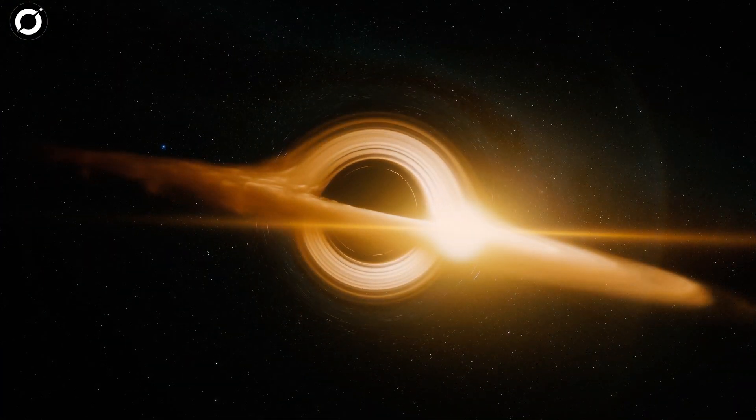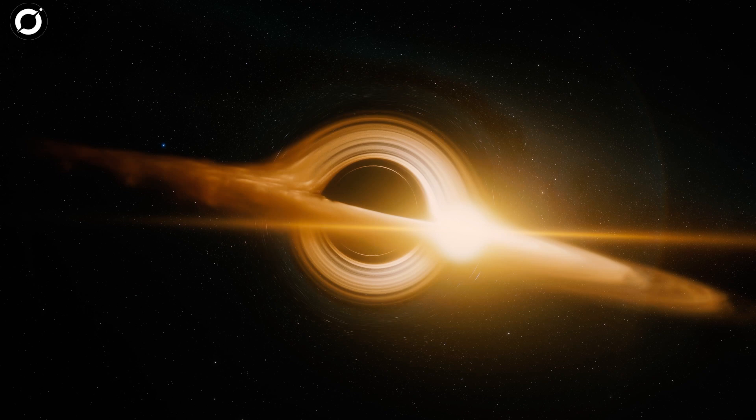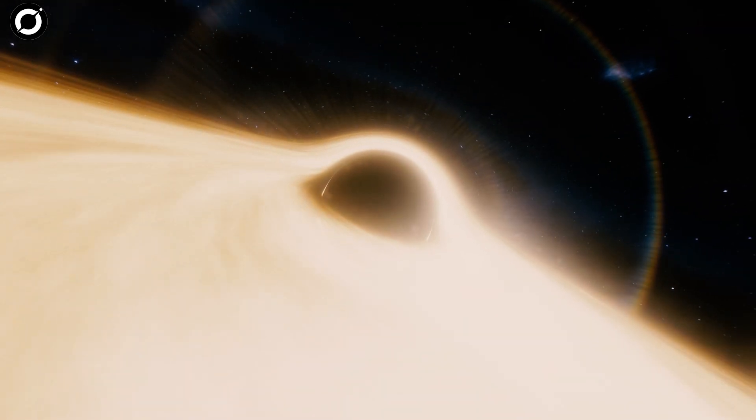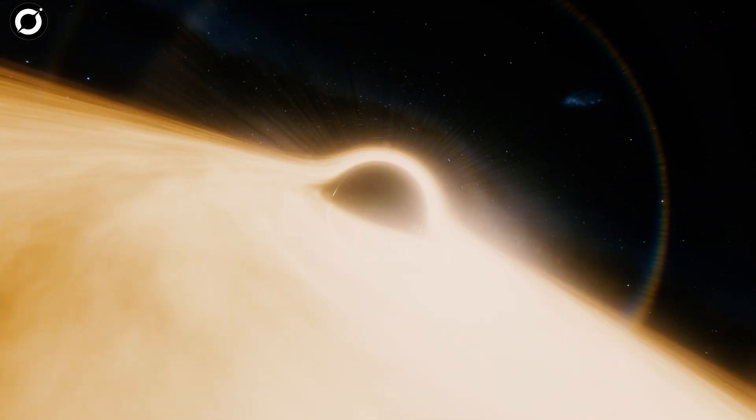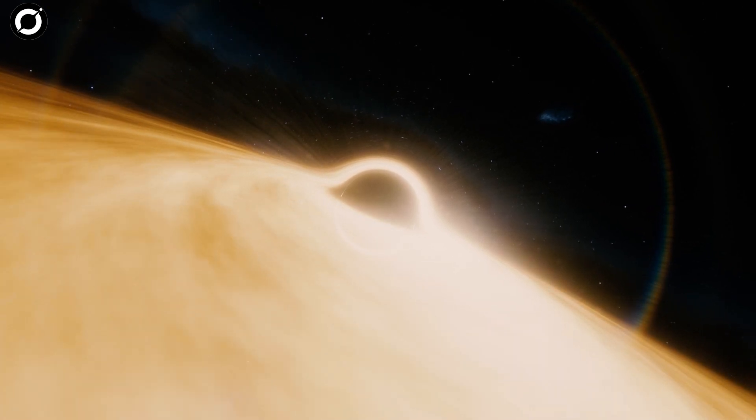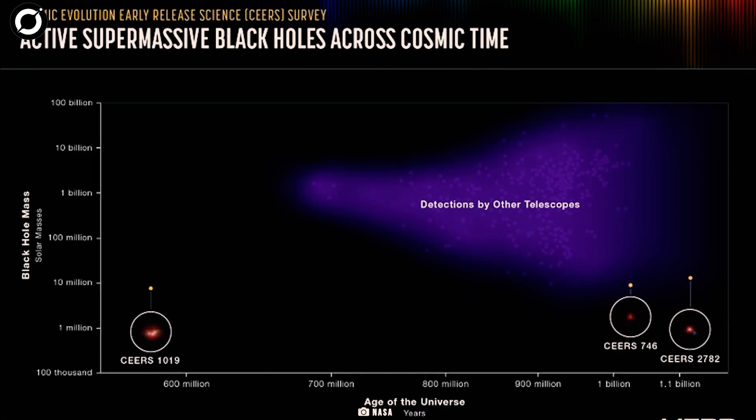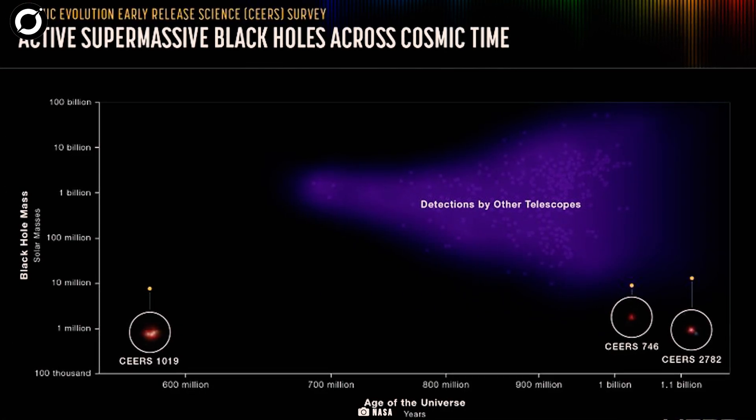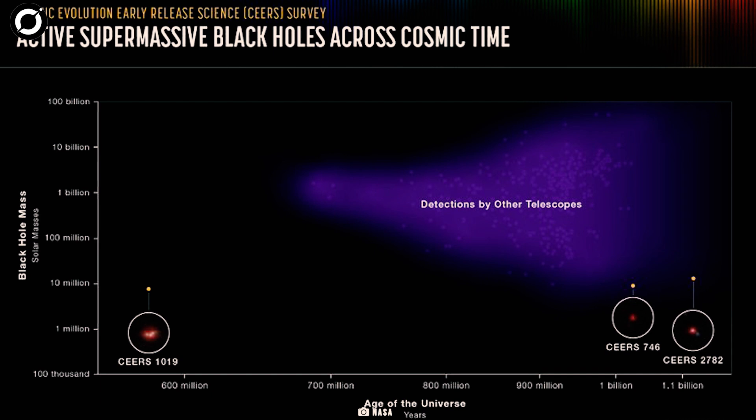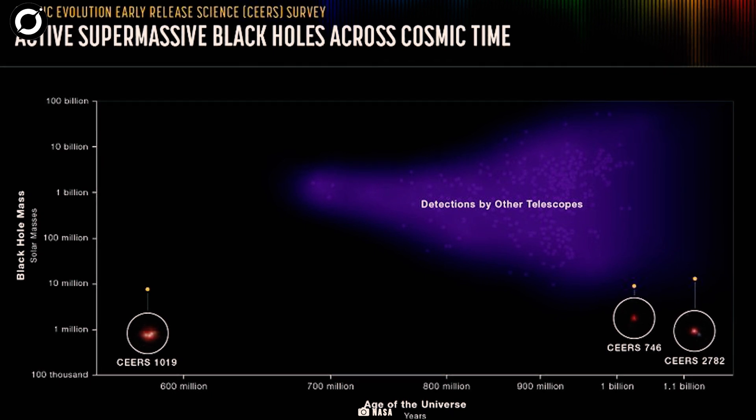Although this black hole, which is an object with a gravitational pull so strong that not even light can escape, is billions of light years away, the Webb telescope's ability to capture extremely faint energy allows researchers to observe what's happening in CEERS 1019.